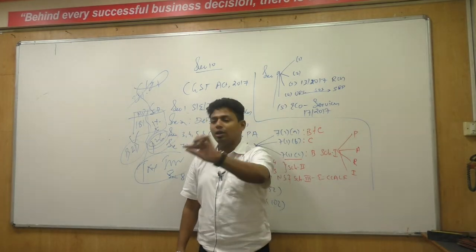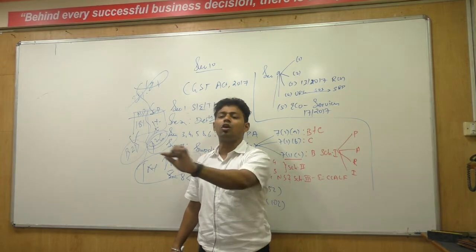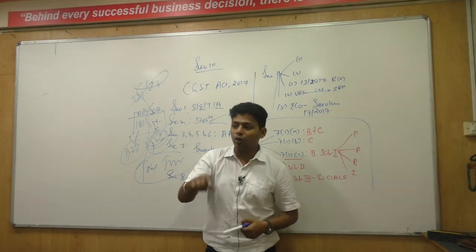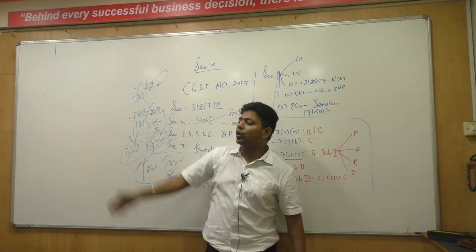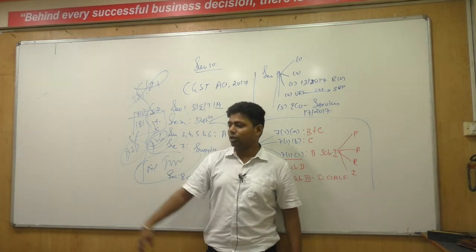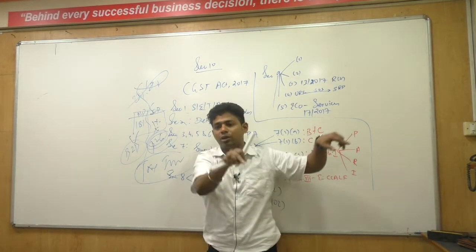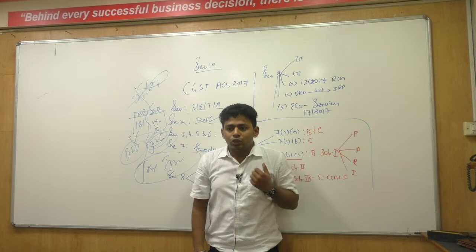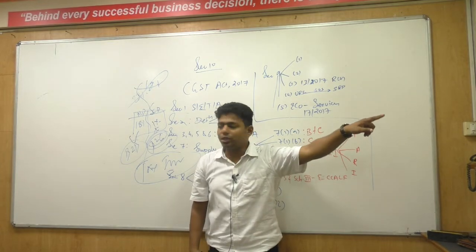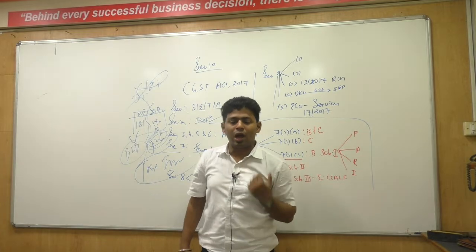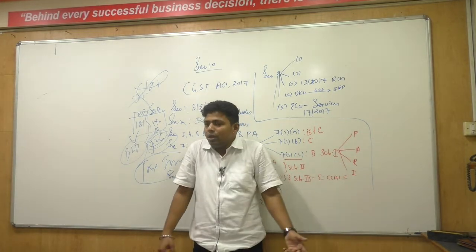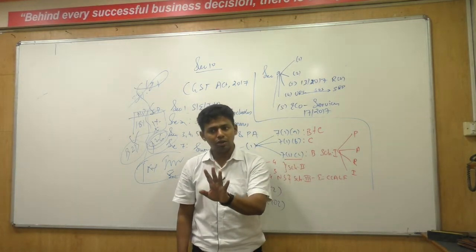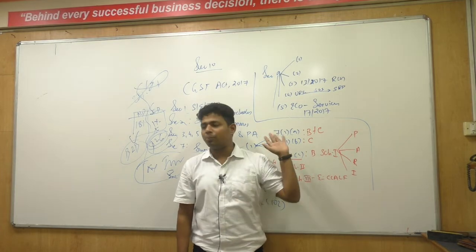Am I clear? So composition dealer cannot issue document called tax invoice. He has to issue bill of supply. On top of the bill of supply it has to be written, this dealer is a composition dealer and ITC cannot be available. It is mandatory to mention these words on invoice. And not only invoice, he has to write that on the name plate of his business. So if you go to some restaurant, specifically Shivshagar and all, if you go there, you can see one board is there on counter. Composition dealer. It has to be written there as composition dealer. Why? Because a buyer should know whether this dealer is a composition dealer or normal dealer. If the board written composition, obviously I am telling you I will not enter into that shop. Why? Because I know this guy cannot issue me ITC. Are you getting this?